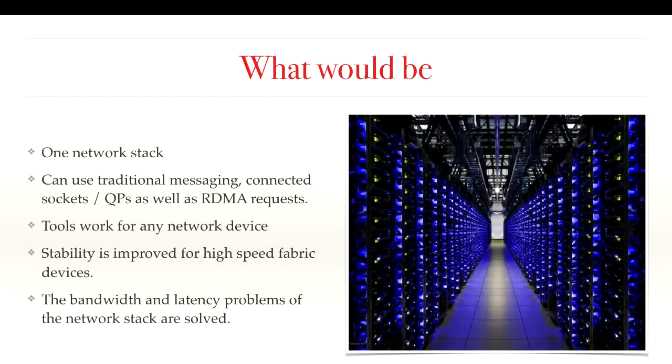What you have right now is: if I want to use RoCE I may have a socket open in the regular network stack and then open another socket on the RDMA stack, doing RDMA transfers via one device and regular messages via the other — it's pretty confusing with strange interactions. I think unifying this would make everything standard and generally available. The results: you can use traditional messaging, connected sockets, or Q-pairs as well as RDMA requests — all cleanly together in a unified network subsystem that handles everything high-speed fabrics need to do, where the tools work for any network device and stability is improved.